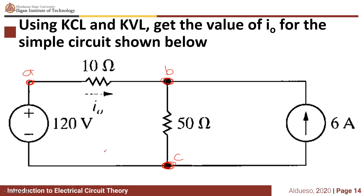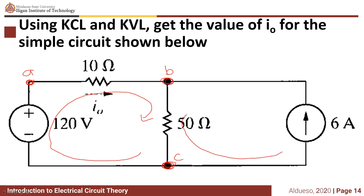By inspection, we can see that this circuit is composed of three loops: the first loop, the second loop, and the third loop, which is the outer loop.